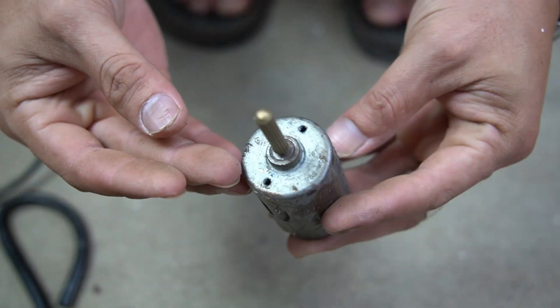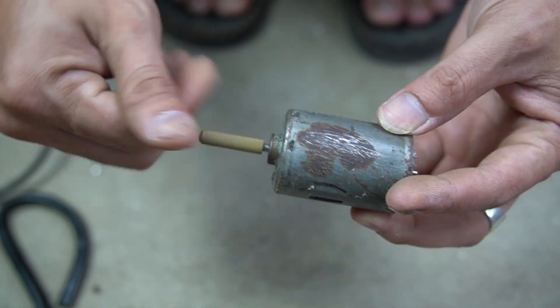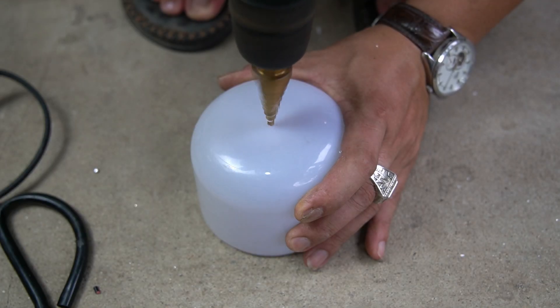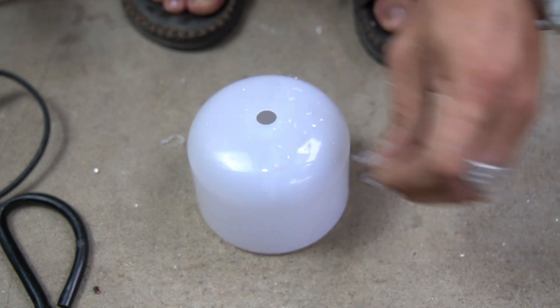Next, I used a small 3.7 volt motor to make a fan. I made a round hole on the cap of the light bulb.